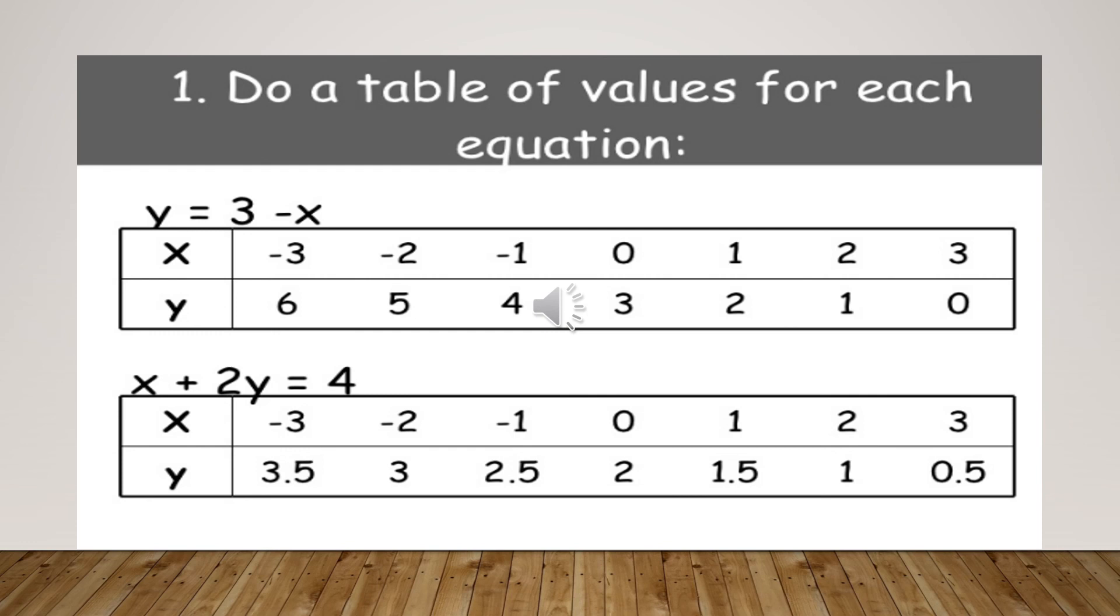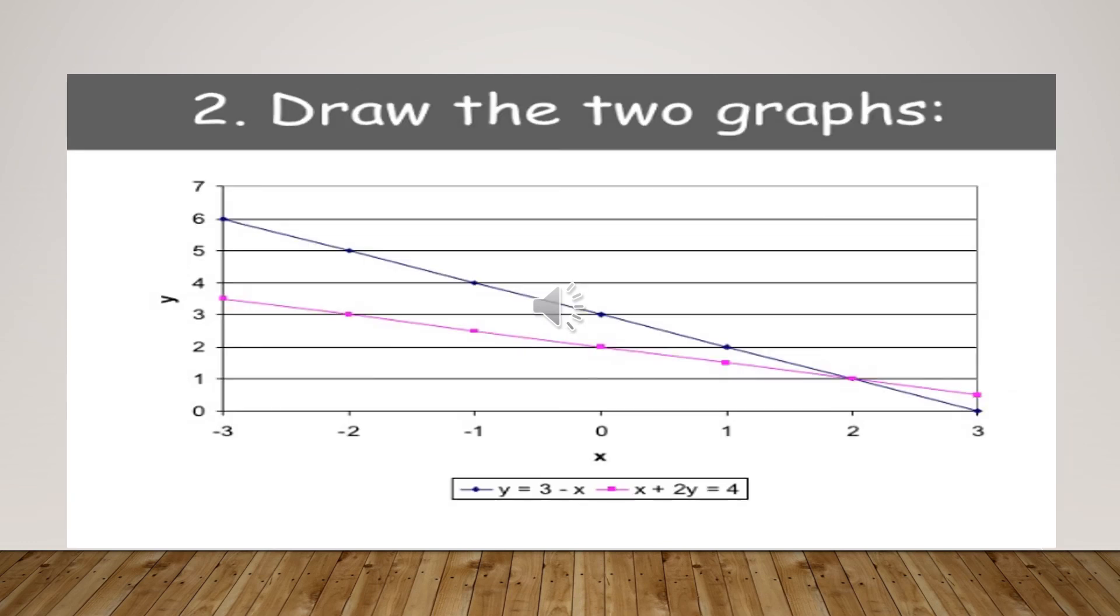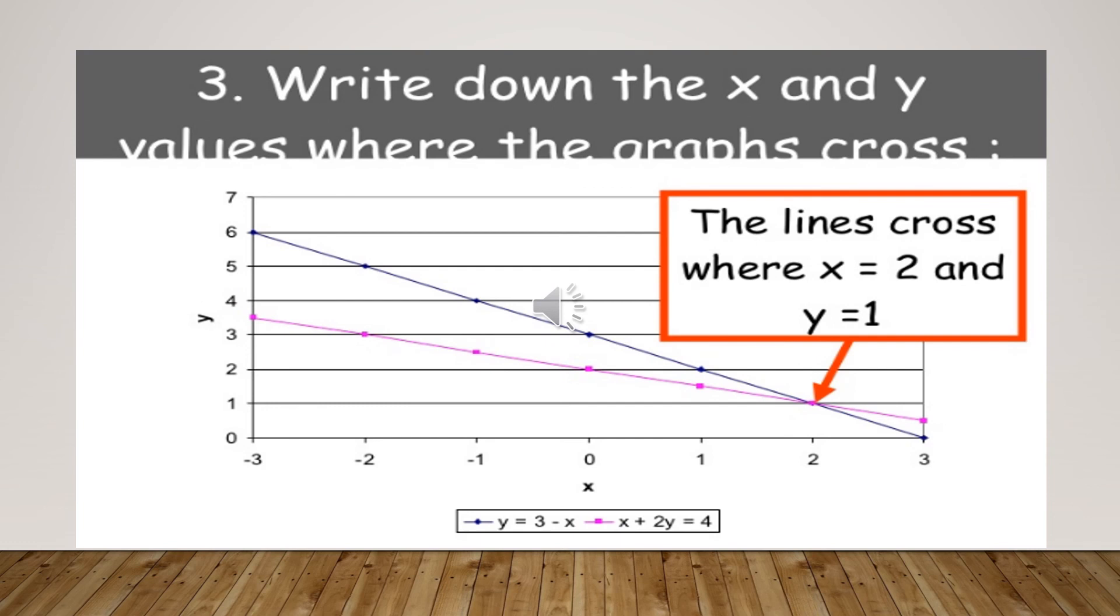After constructing the table, you are just going to draw the graph and you can see that both of the lines are coinciding at a point. You can clearly see that the lines are crossing where x equals to 2 and y equals to 1. It means that the value of x is 2 and the value of y is 1. It means the point at which both of the lines are crossing each other, that will be your x and y coordinate.